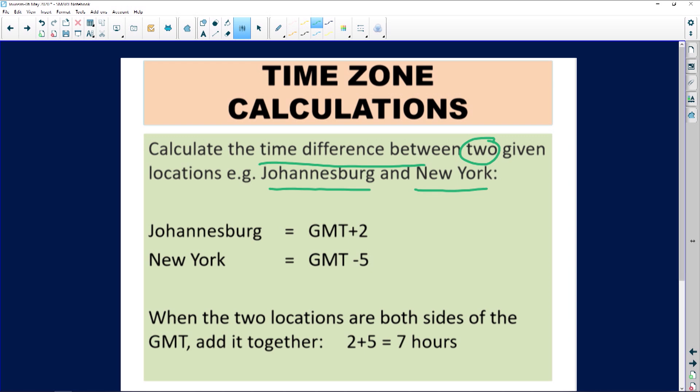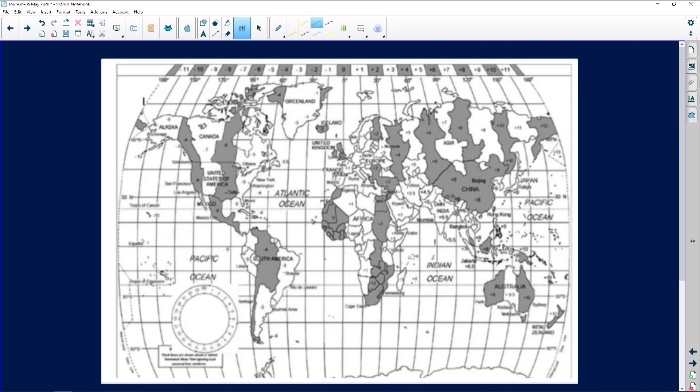Before we even try to attempt the calculation we have to go to our time zone map. That's why I taught you earlier on it's so important to learn to identify things on your map. First of all we need to identify our zero degree line of longitude or the GMT. You can write it out for yourself just to know this is where we measure from.